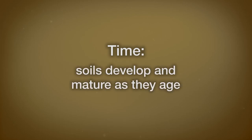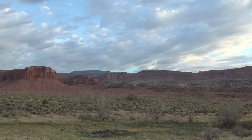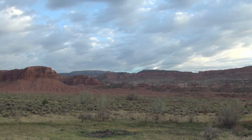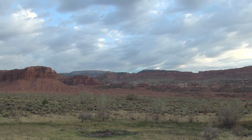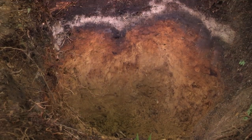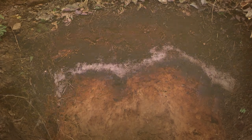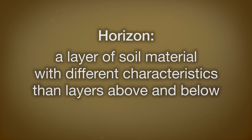Time is the last soil forming factor. Soils require time to develop. As soils age, they develop a variety of characteristics, such as greater depth, different kinds of organic matter concentrations, and so on. As soils form, they develop characteristic layers or horizons. The composition of these different horizons depends largely on the soil forming factors that we just described.